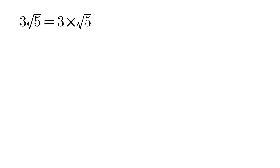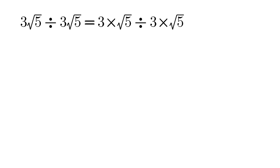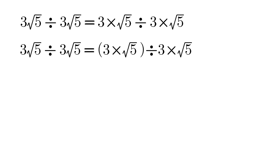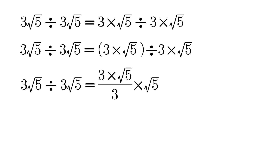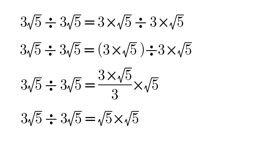We know that 3√5 equals 3√5, so we can write: 3√5 ÷ 3√5 equals 3 into root 5 divided by 3 into root 5. According to the modern order of operations, multiplication and division are done from left to right. Applying the order of operations gives us: 3√5 ÷ 3√5 = (3 ÷ 3) × (√5 × √5) = √5 × √5 = 5.